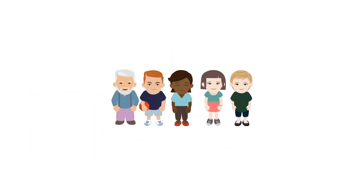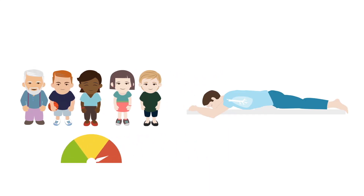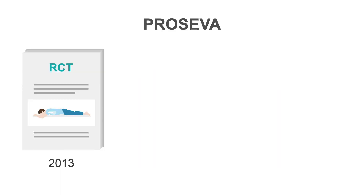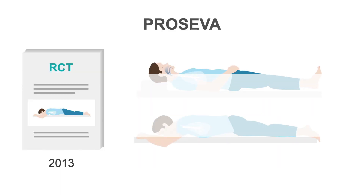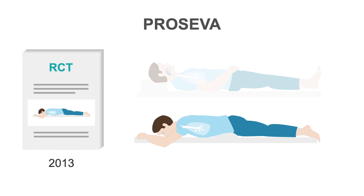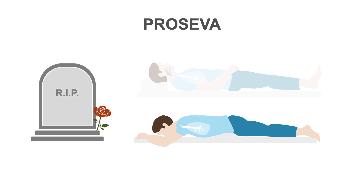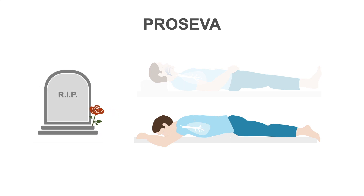Only subgroup analysis of patients with moderate to severe ARDS demonstrated benefit in the early proning trials. In 2013, the Proning Severe ARDS Patients Randomized Control Trial, referred to as PROSEVA, demonstrated a significant mortality benefit to placing patients in prone positioning.